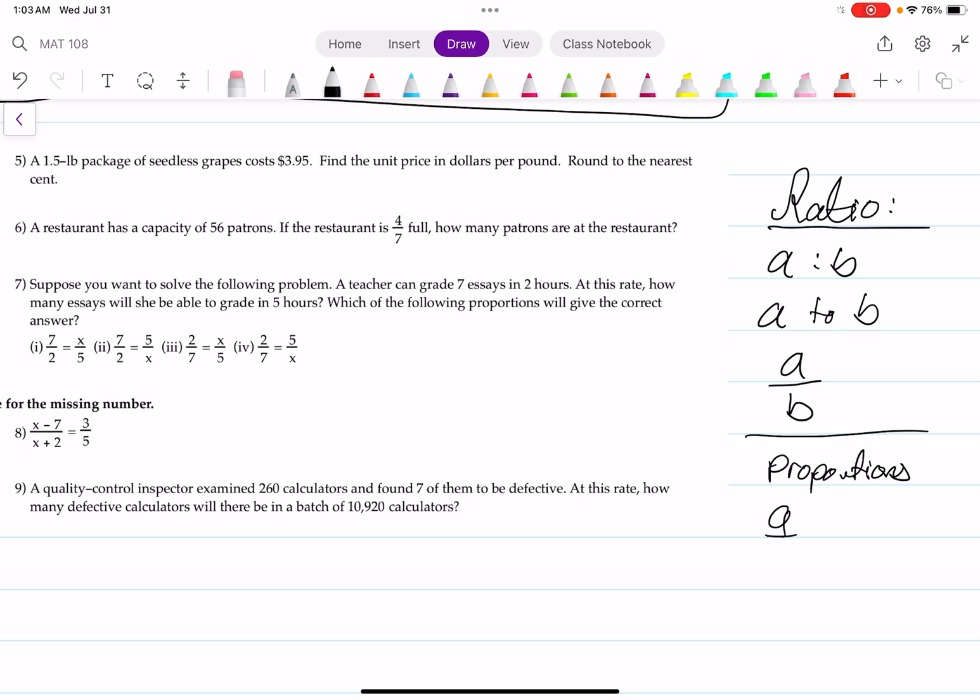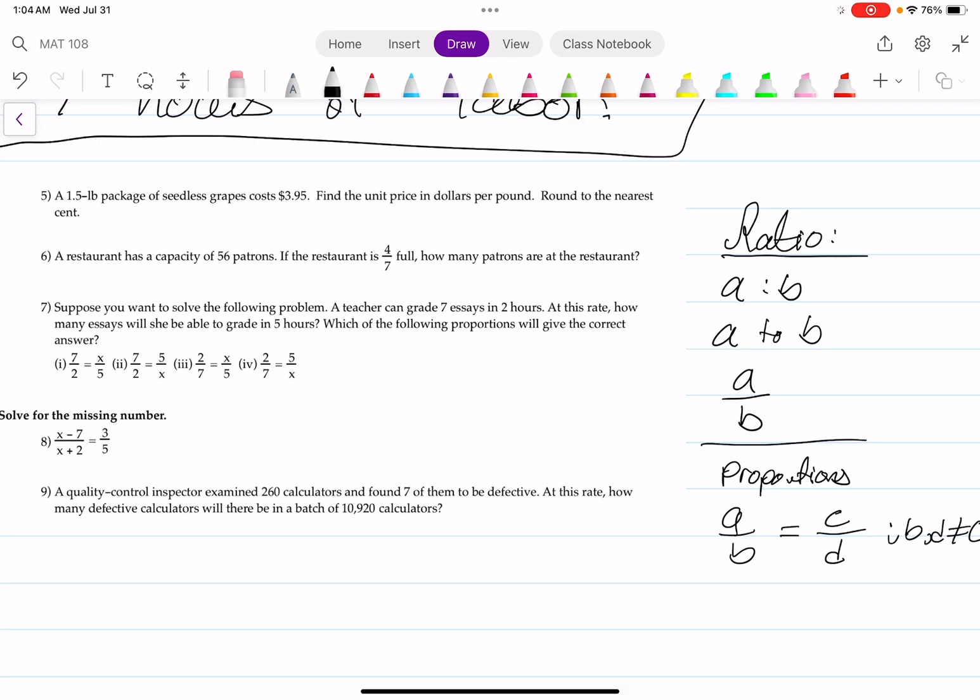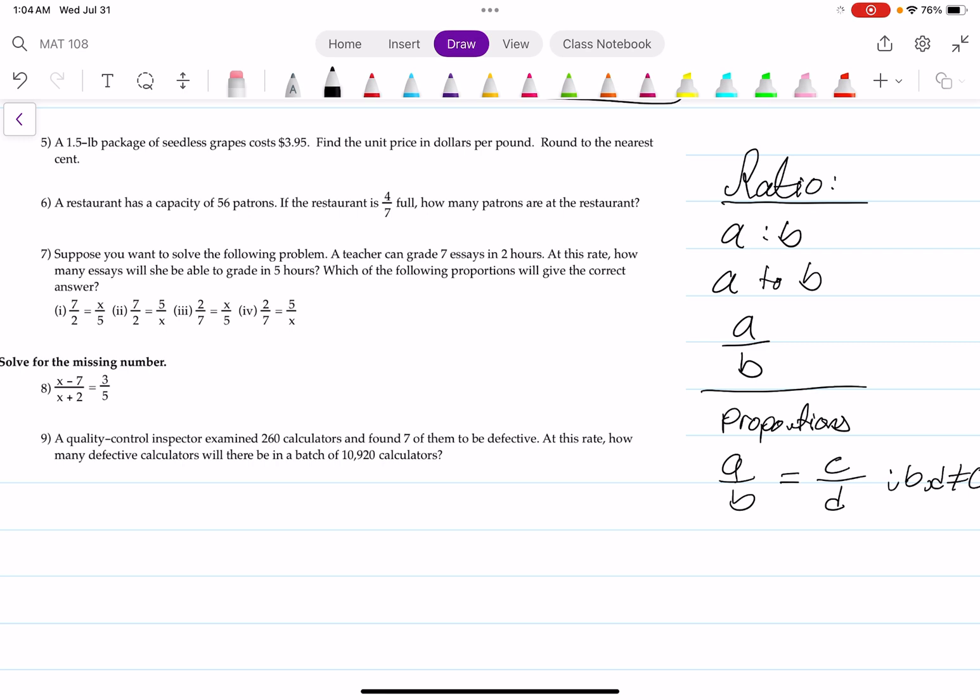That means you have two sets of ratios equal to each other. We're going to assume that B and D are not equal to zero because we don't want to work with undefined numbers. In order for us to determine if the ratios are equivalent, we use cross-multiplication, such that A times D equals B times C.